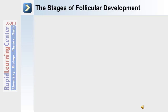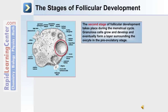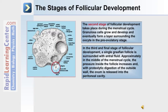Let's continue with the stages of follicular development. The second stage of follicular development takes place during the menstrual cycle. Granulosa cells grow and develop and eventually form a layer surrounding the oocyte in the pre-ovulatory stage. In the third and final stage of follicular development, a single graafian follicle is surrounded with antral fluid. Approximately in the middle of the menstrual cycle, the pressure inside the follicle increases, and with proteolytic digestion of the outside wall, the ovum is released into the peritoneal cavity.